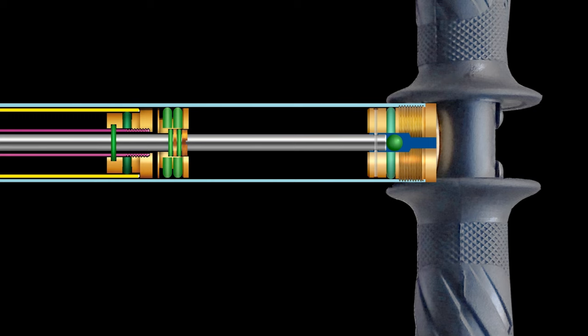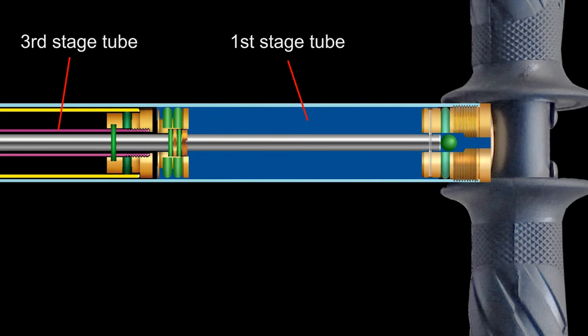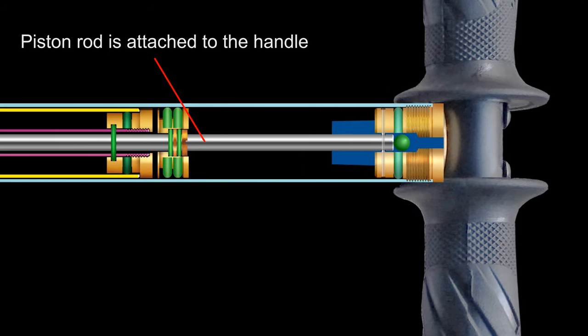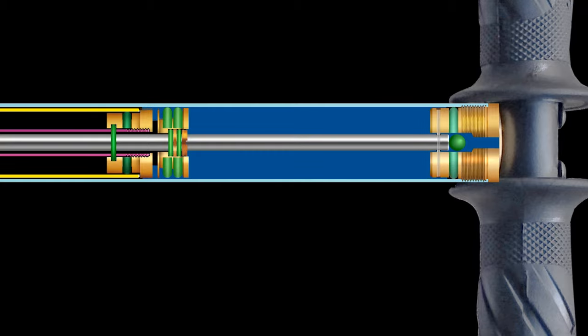The holes in the piston lead the air into the third tube from the first tube. The third stage piston rod is attached to the handle. It also moves with the handle.